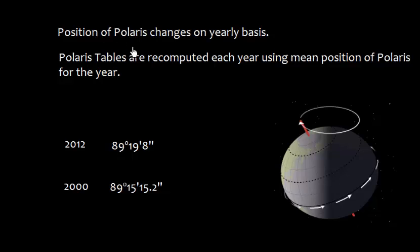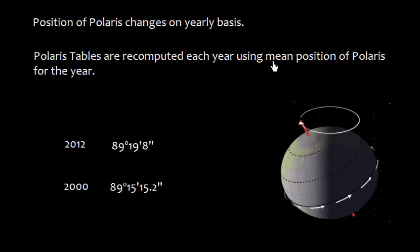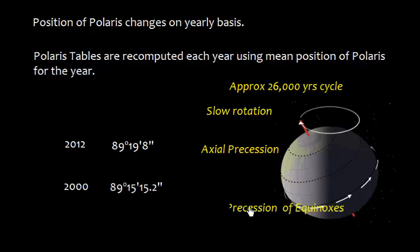Let me explain a few concepts here. The position of Polaris changes on a yearly basis, and the Polaris tables are recomputed each year using the mean position. In 2012, the declination was 89 degrees 19 minutes 8 seconds, and in 2000 it was 89 degrees 15 minutes 15.2 seconds. This is because of Earth's precession—it takes approximately 26,000 years for one cycle where the axis rotates. We call it axial precession or precession of the equinoxes. That's why the tables are computed on a yearly basis.